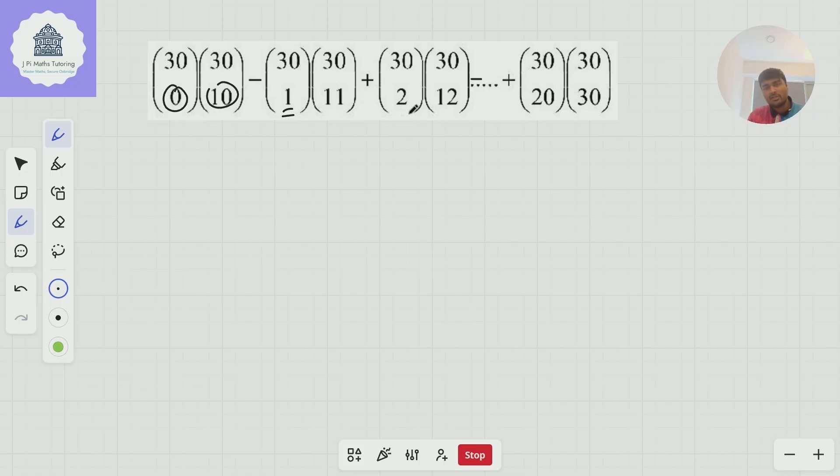So 0 goes to 1, 10 goes to 11, 1 goes to 2, 11 goes to 12, and so on. And that's great, but I'd actually prefer if they added up to a constant number. And actually they do, because remember, binomial coefficients are symmetric.